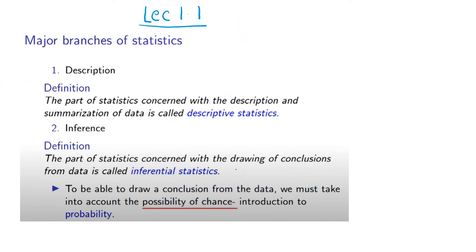There are two major branches of statistics. One is descriptive statistics and the other is inferential statistics. The part of statistics concerned with the description and summarization of data is called descriptive statistics, whereas the part concerned with the drawing of conclusions from data is called inferential statistics.